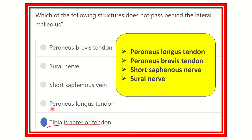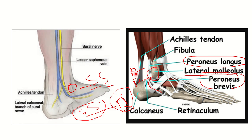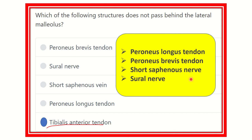To recap: the two P's are peroneus longus and peroneus brevis, and the two S's are the short saphenous vein and the sural nerve. These four structures all pass behind the lateral malleolus, while the tibialis anterior tendon does not.